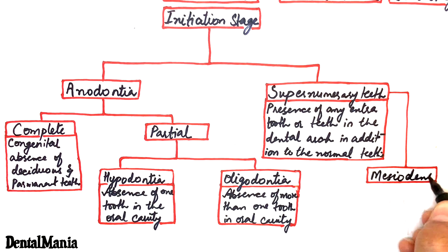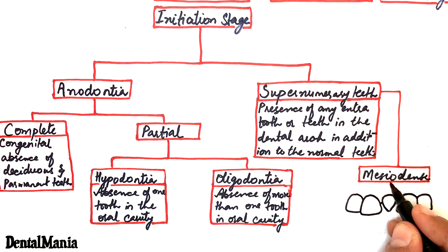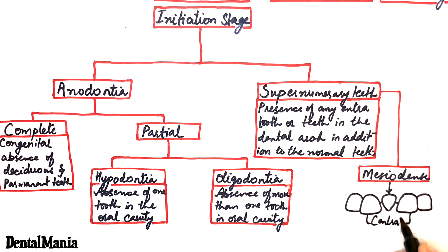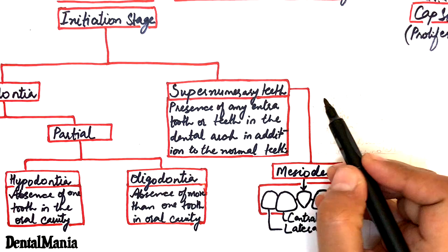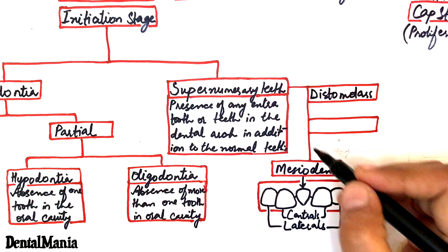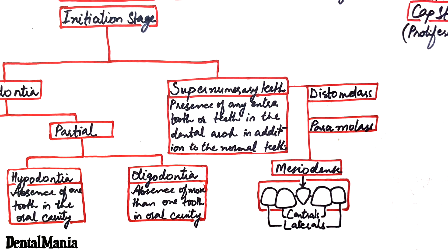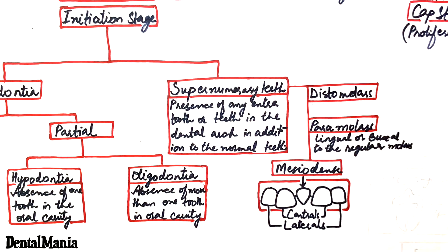One of the most common examples of the supernumerary teeth is the mesiodents located in the midline and on the bilateral aspect between the two central incisors in the maxillary arch. Other examples of the supernumerary teeth are the distomolars and the paramolars. While paramolar is located lingual or buccal to the regular molar, distomolar is located distal to the last molar.